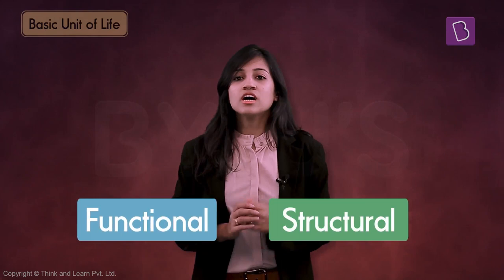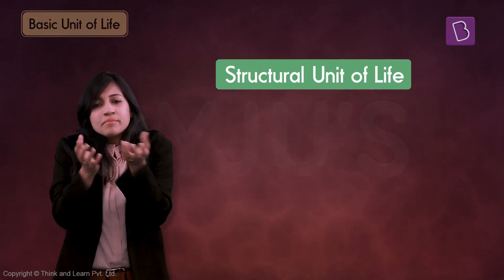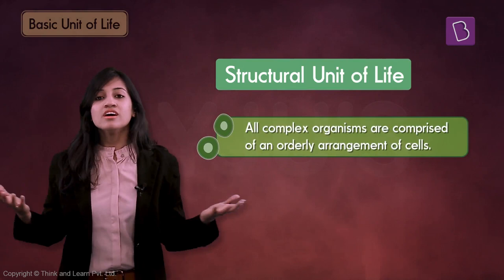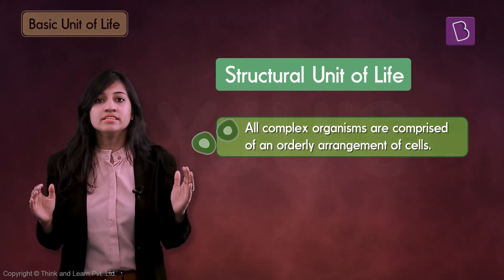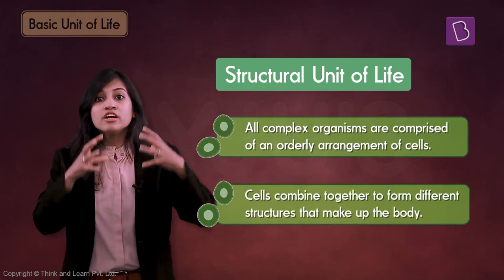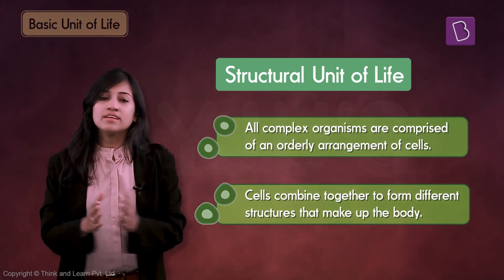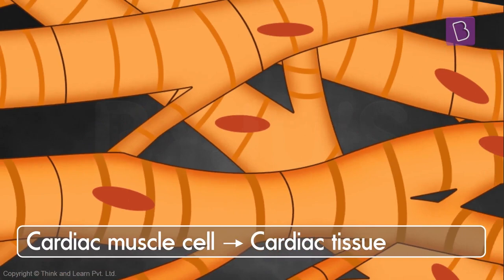The structural unit of life simply refers to the fact that all complex organisms like you and me are comprised of an orderly arrangement of cells. These cells together don't just sit quietly as cells — they form different structures that together make up the entire body. For example, many cardiac muscle cells come together to form cardiac tissue, and cardiac tissue comes together to make up the heart.